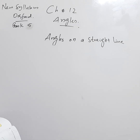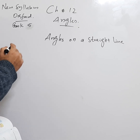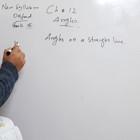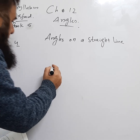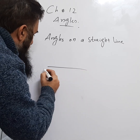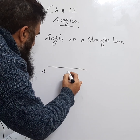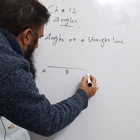Welcome. We are on page number 241, chapter number 12: Angles. We are learning angles on a straight line. Example number four is given: ABC is a straight line — A, B, and C.